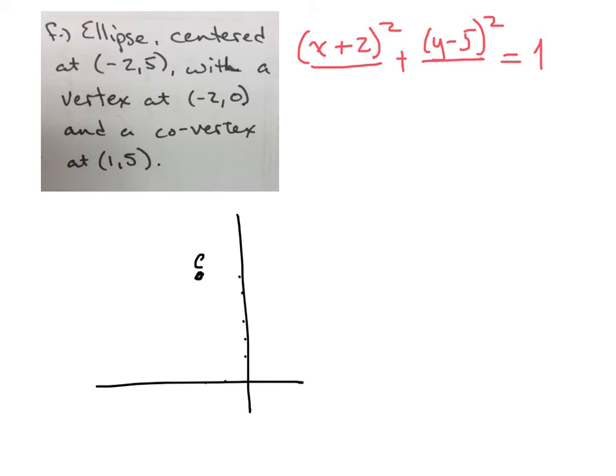Now, it tells us that one vertex is at negative 2, 0. So negative 2, 0 is down here. That means the other vertex has to be just as far on the other side, so way up here.